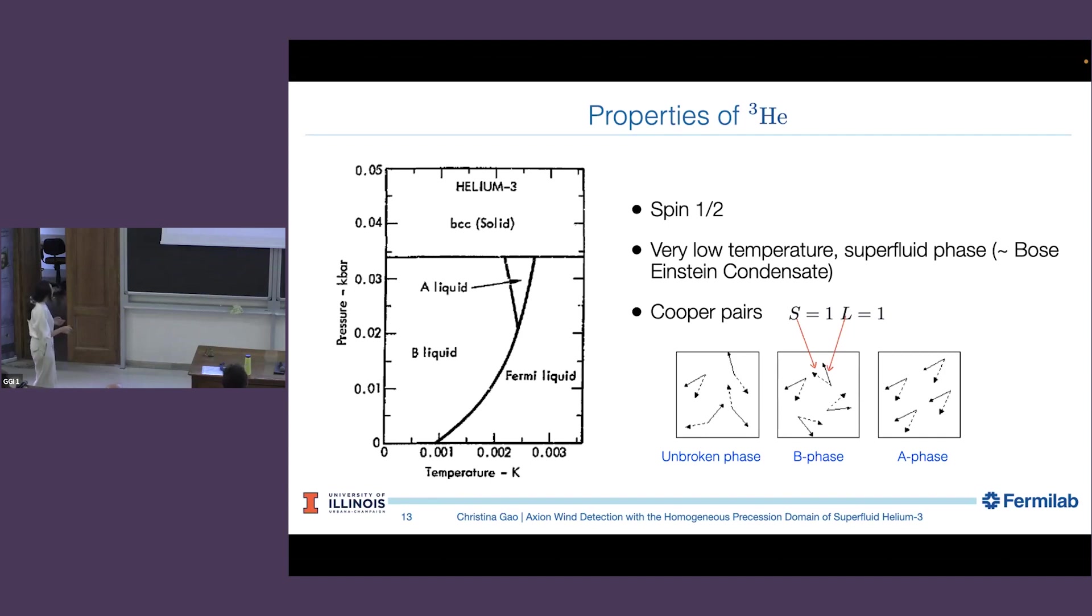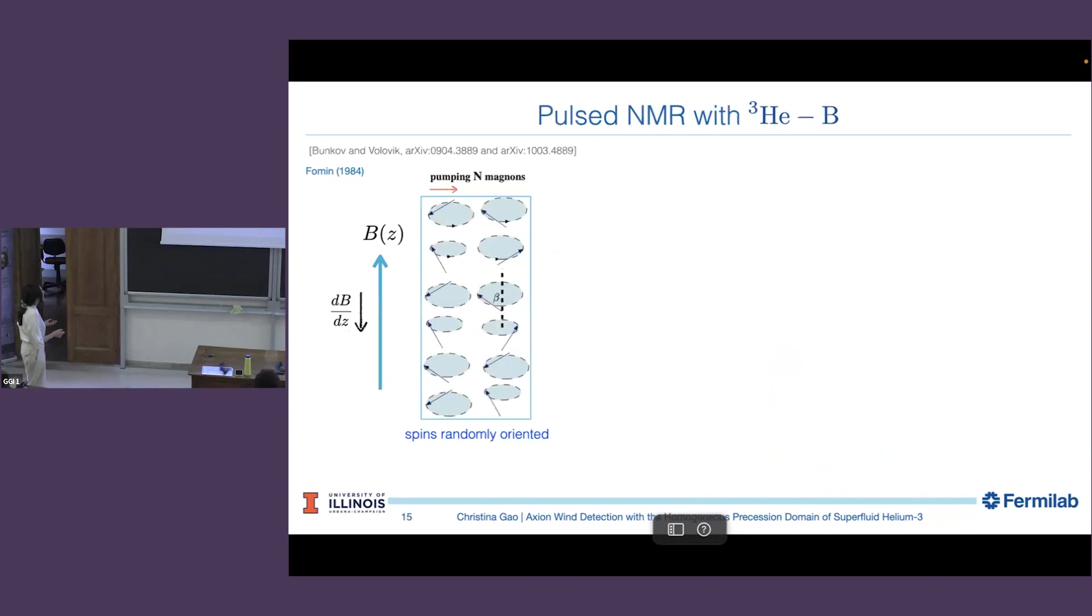You often hear people talking about magnons and stuff like that. The spin. Because you have those spins associated with each helium, you can send spin waves in this material and the quasi-particle associated with spin wave is called magnon. So in this superfluid phase, the magnon forms a BEC. That's another way of talking about this phase.